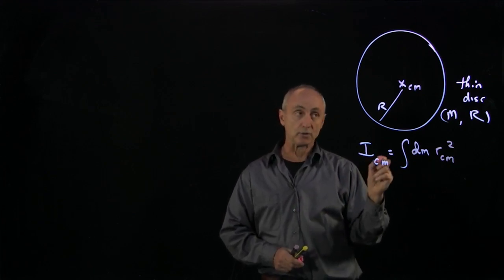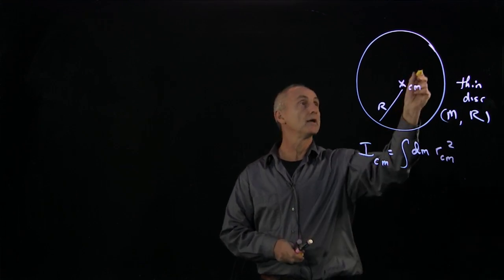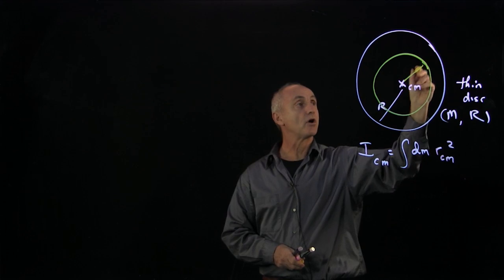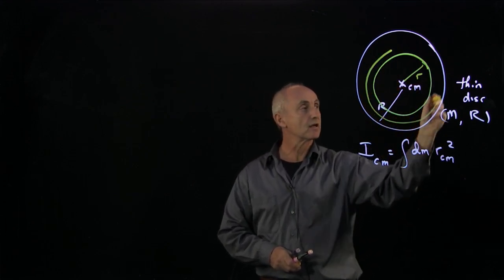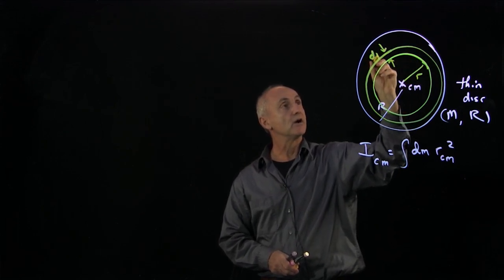So the way I'll do it is I will choose a ring. I'm going to choose a ring of radius r, and now I'll make the ring a certain thickness, and this thickness is dr.